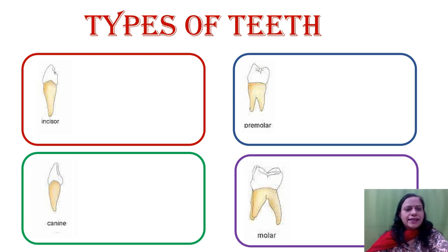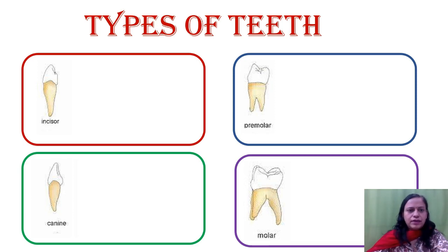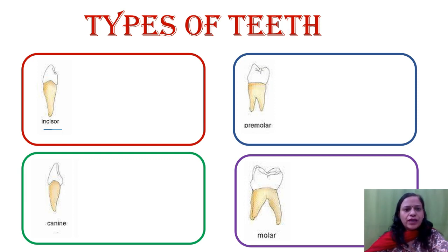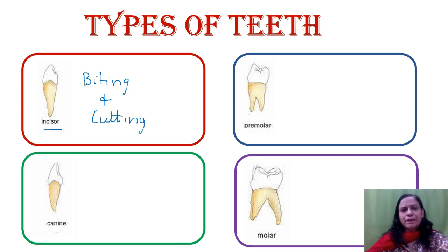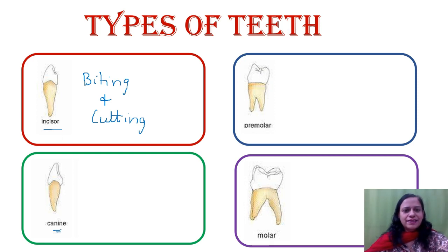The first type is the incisors. They are the middle teeth and they are used for biting — so if you are eating an apple you use the incisors to bite it. That is why they are also known as the biting teeth or the cutting teeth, because they help us cut the food. When you're eating a biscuit or chips, you cut it with your incisors.